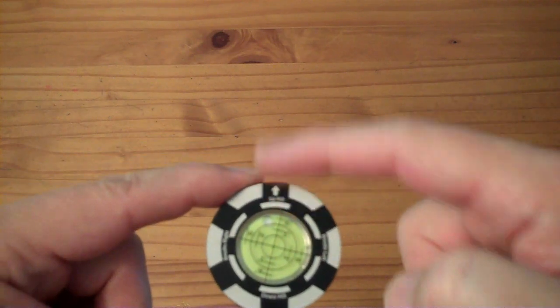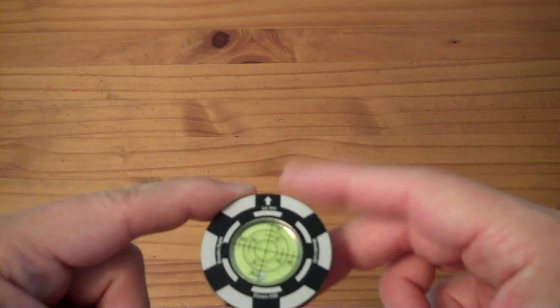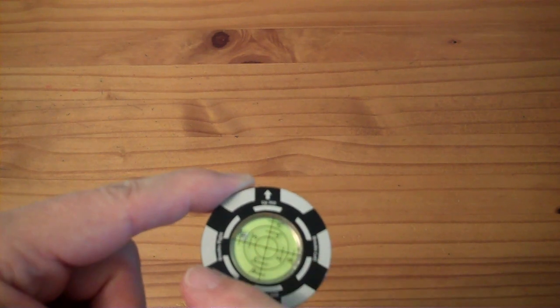Now if you are a golfer, you'd point that at the hole and then wherever the bubble goes will tell you is the hole downhill, is it going to break right or break left.